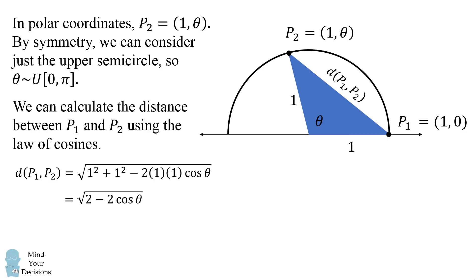How can we simplify this further? I did not think of this, but the technique is to use the sine half angle formula. The sine of x over 2 is equal to the square root of 1 minus cosine of x all over 2. Therefore we can write the distance between p1 and p2 as 2 times the sine of theta over 2.